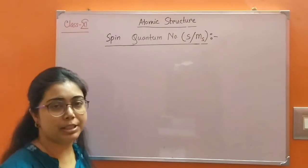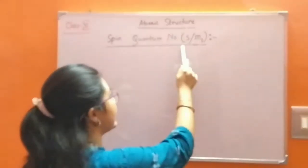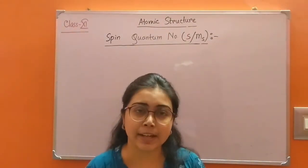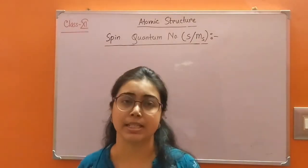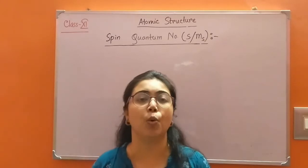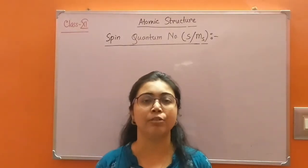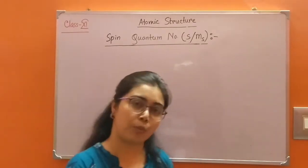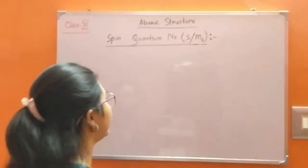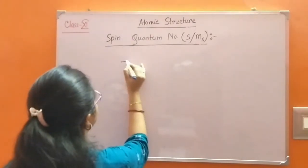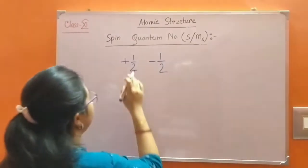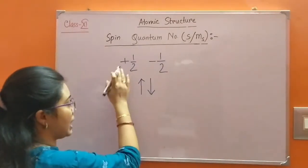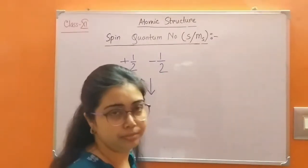Now, spin quantum number. Spin quantum number is represented by S or MS. This quantum number accounts for the spin of the electron. The electron in an atom not only revolves around the nucleus but also rotates around its own axis. The rotation of the electron around its own axis is called spin. There are two possibilities for spin: clockwise and anticlockwise. So spin quantum number can have two values, that is plus half and minus half.